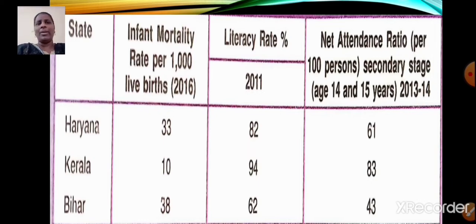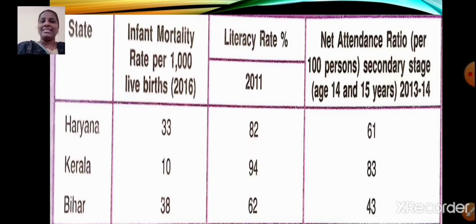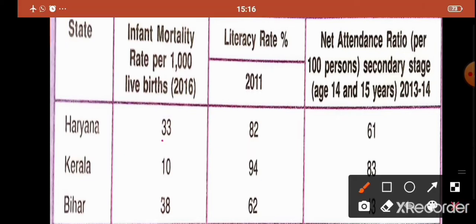You are all aware about infant mortality rate, literacy rate and net attendance ratio — we have already learnt about these terms. Now let's start comparing these three states. Haryana's infant mortality rate in the year 2016 was 33, Kerala 10 and Bihar 38. The infant mortality rate of Kerala was low.